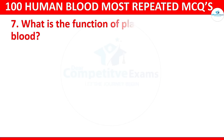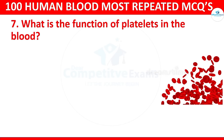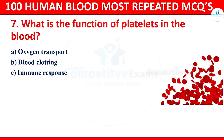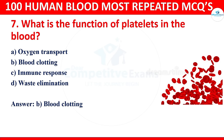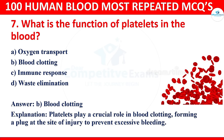Question 7: What is the function of platelets in the blood? Options: oxygen transport, blood clotting, immune response, or waste elimination. The correct answer is blood clotting. Platelets play a crucial role in blood clotting, forming a plug at the site of injury to prevent excessive bleeding.